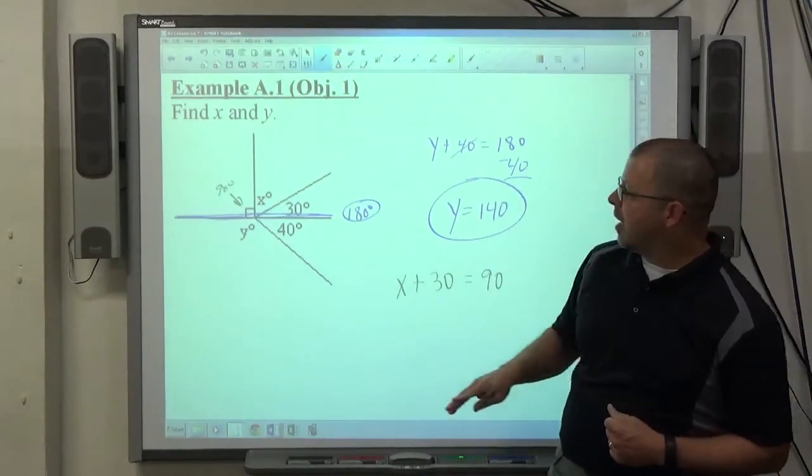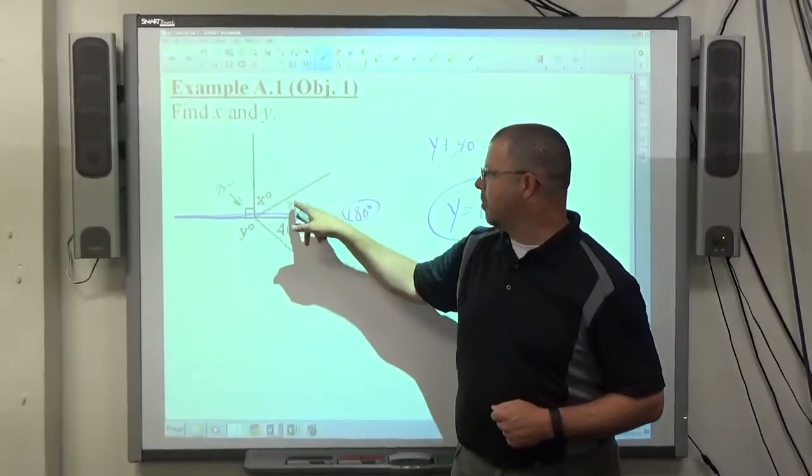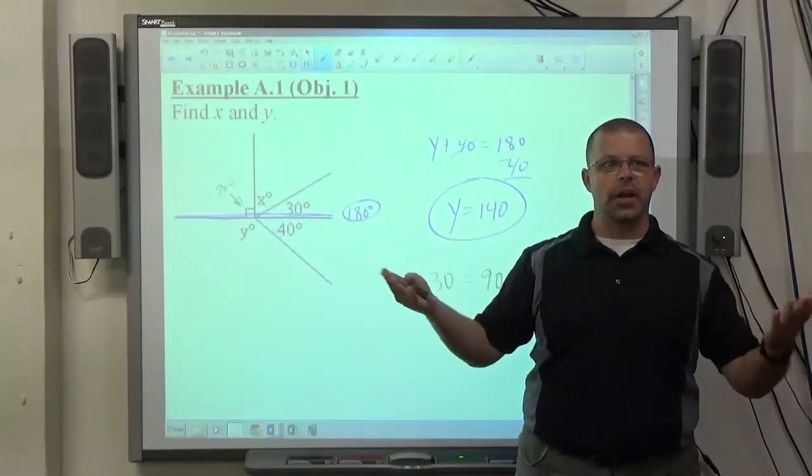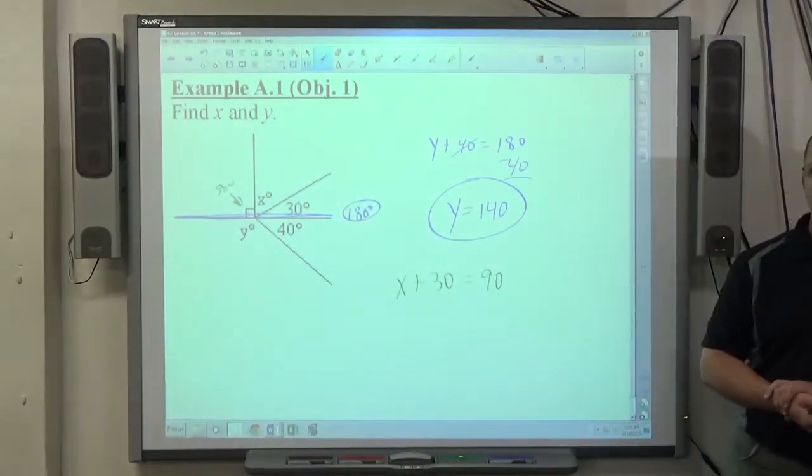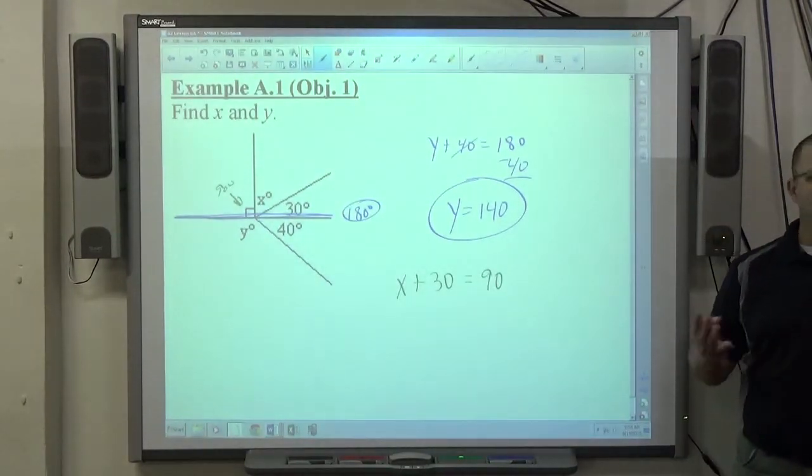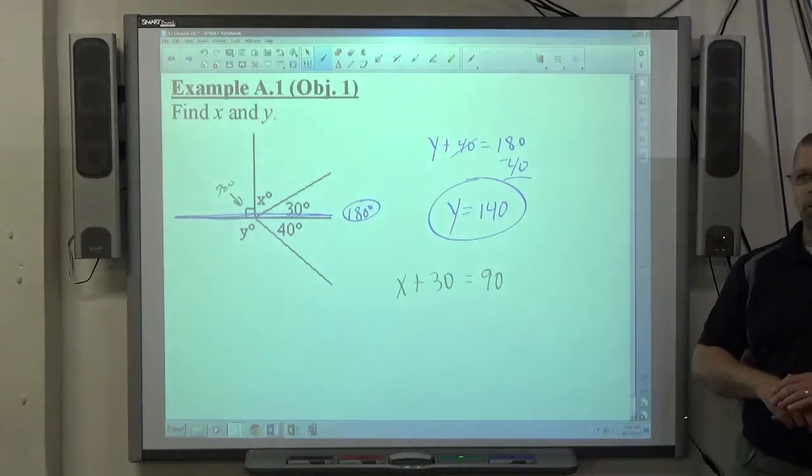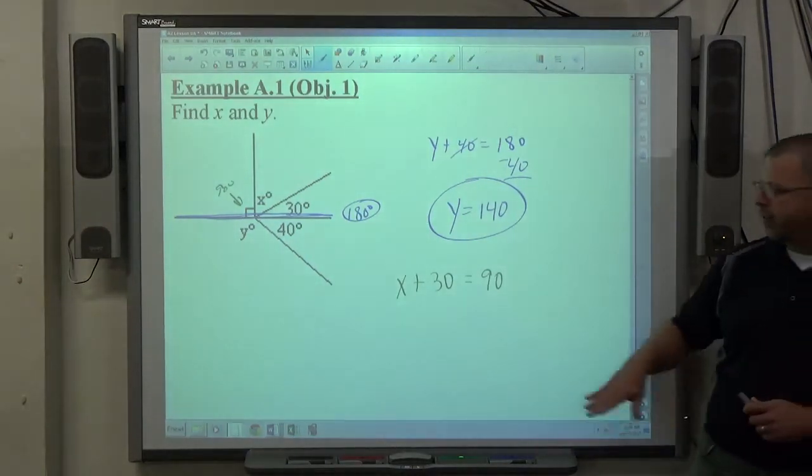The other legal equation you could have come up with would be 90 plus x plus 30 equals 180. Those three angles together make up the straight line, so all three make 180. So either one of those equations would be fine. This is the more streamlined equation. It's more efficient.